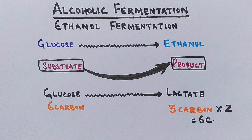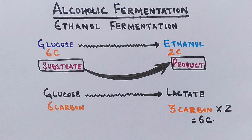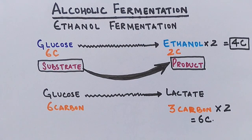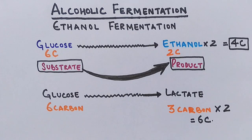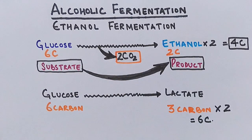In ethanol fermentation, we have the same glucose molecule with six carbons, and the final product is ethanol, which has only two carbons. Two molecules of ethanol are formed, giving 2×2 = 4 carbons. The remaining two carbons are accounted for by two molecules of carbon dioxide, which is produced as a byproduct or waste product in this process.